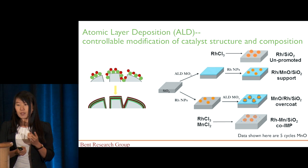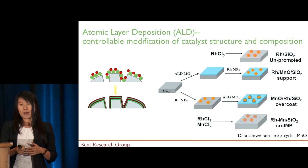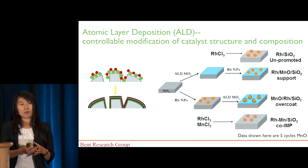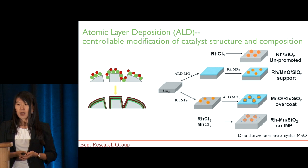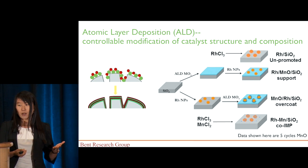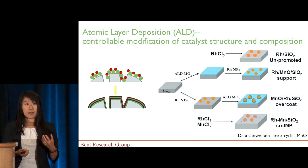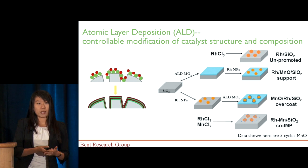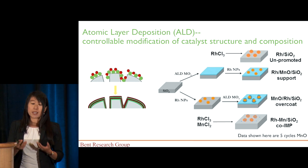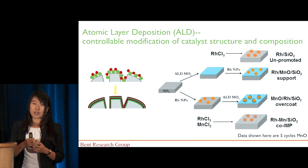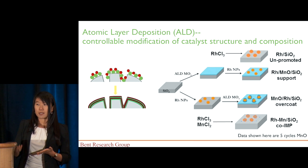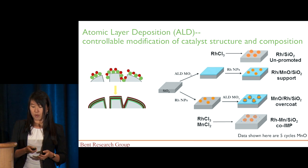Besides using ALD to modify the catalyst structure, we also use a conventional method, co-impregnation, to incorporate these manganese promoters. The co-impregnation method is simply done by mixing the rhodium and manganese precursor together into the impregnation solution. This method is simple and effective. However, it doesn't have good control over how much manganese is mixed into the rhodium nanoparticles and how much manganese ends up on the nanoparticle surface. Also, the nanoparticle size can usually be smaller from this co-impregnation method. Therefore, by using ALD, we're hoping to have fewer variables so that we can focus on the role of these metal oxides without changing other parameters, for example the size of the nanoparticles or the porosity of the support.